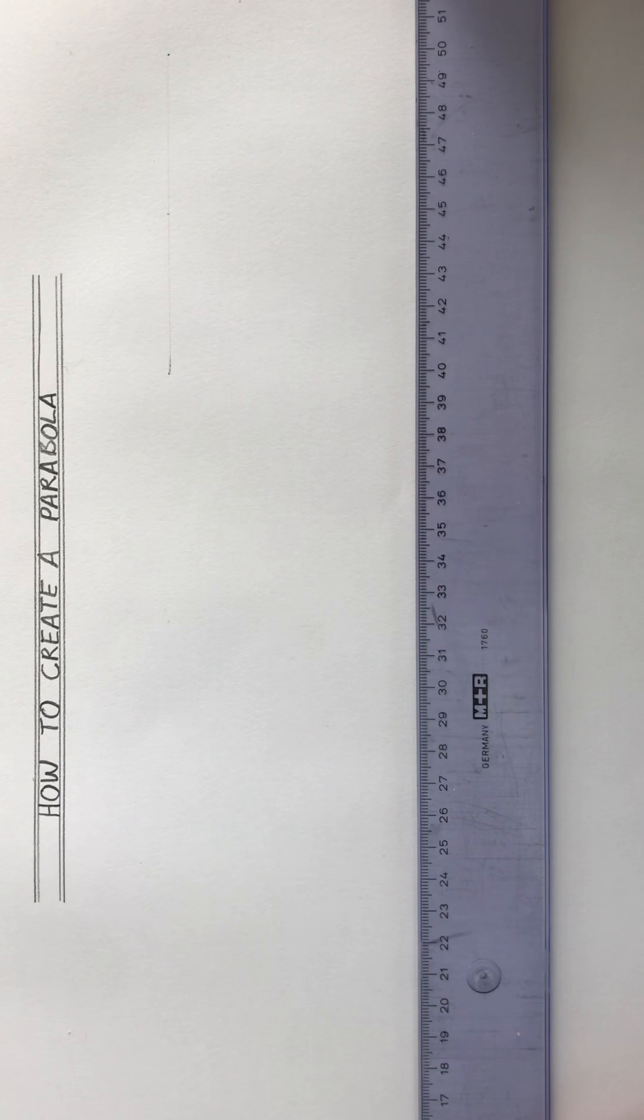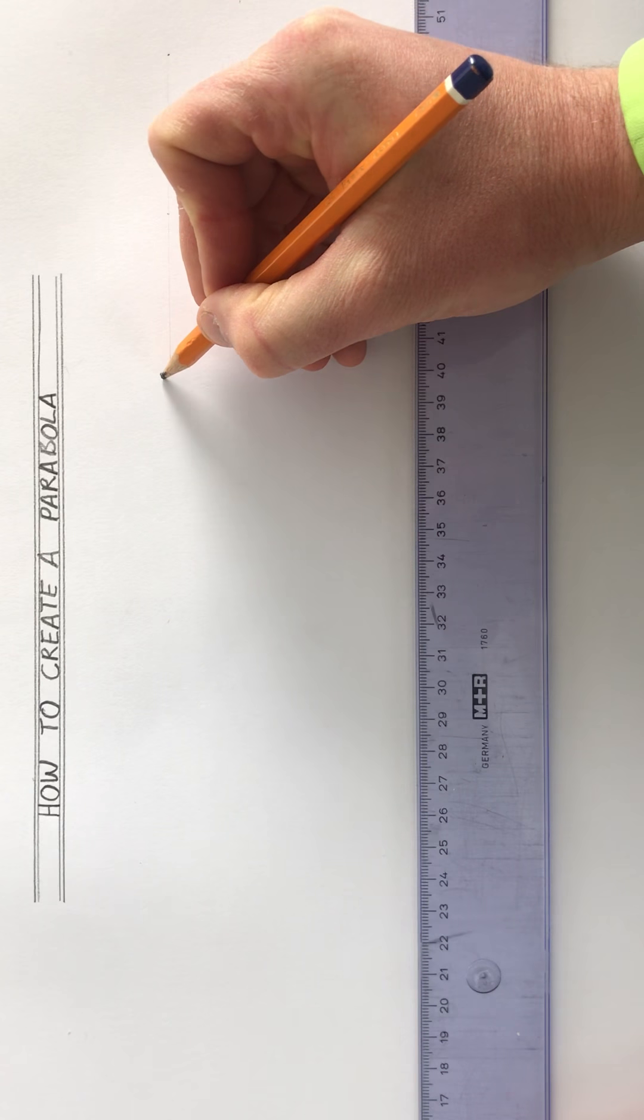Okay, we're now going to look at the parabola and how to create one. First of all, what is a parabola? A parabola is basically a path of points, and a very good example is if I have a football.